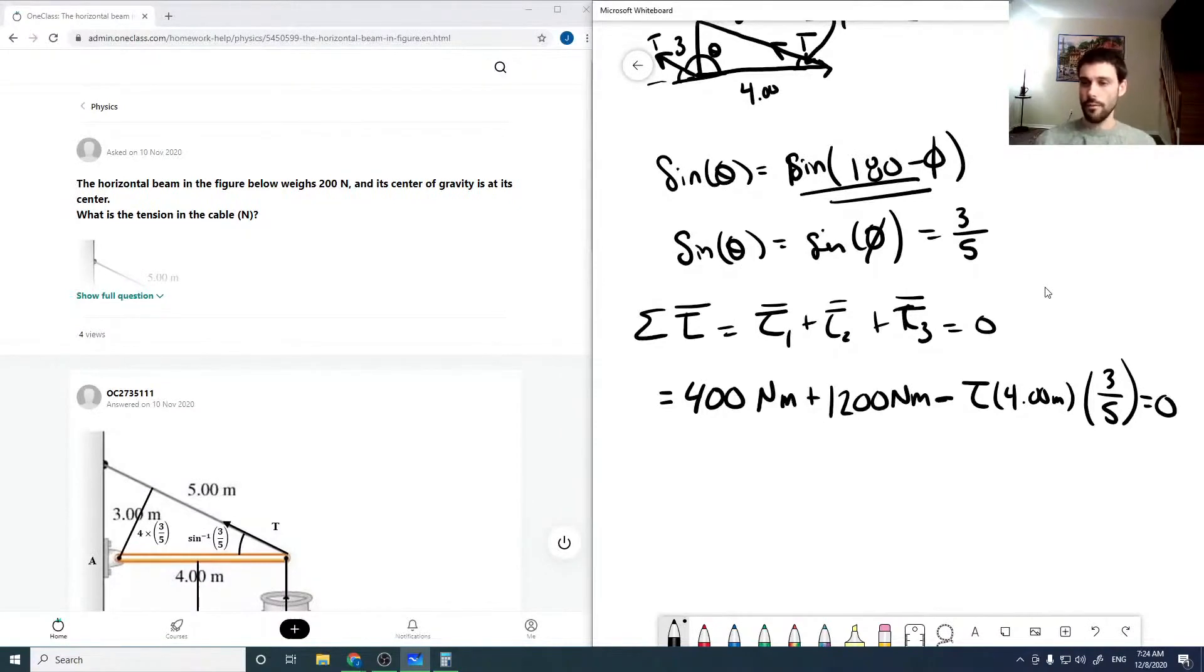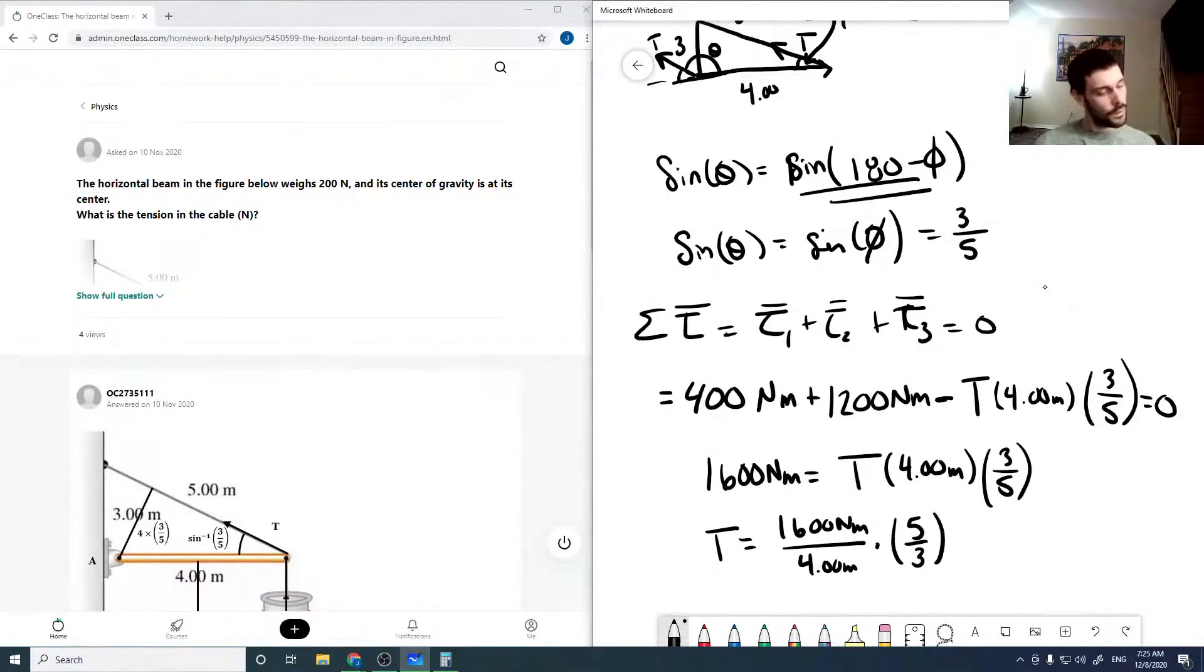Now we can solve for our tension by summing this up and rearranging. We have 1600 newton meters equals the tension times four meters times three over five. So our tension is 1600 newton meters over four meters times five-thirds, which equals 666.67 newtons.